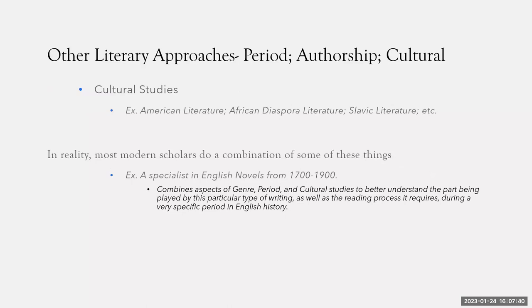If you're a cultural studies person, you might study Slavic literature, Russian literature, or Japanese literature from all sorts of different genres — novels, poems, plays — and all sorts of different periods. Today's literary scholars often do a combination of many of these approaches. A specialist in English novels from 1700 to 1900, for example, would combine aspects of genre, period, and cultural studies to better understand what novels did for England during that specific period.